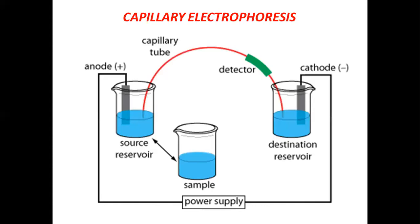This is a schematic of the capillary electrophoretic technique. The capillary tube, shown as a red-colored object, is immersed at one end into a source reservoir and at the other end into a destination reservoir. The blue-colored solution present in both reservoirs is the buffer — the same buffer is present in both. Both terminals of the capillary tube are immersed in buffer solution of known ionic strength.